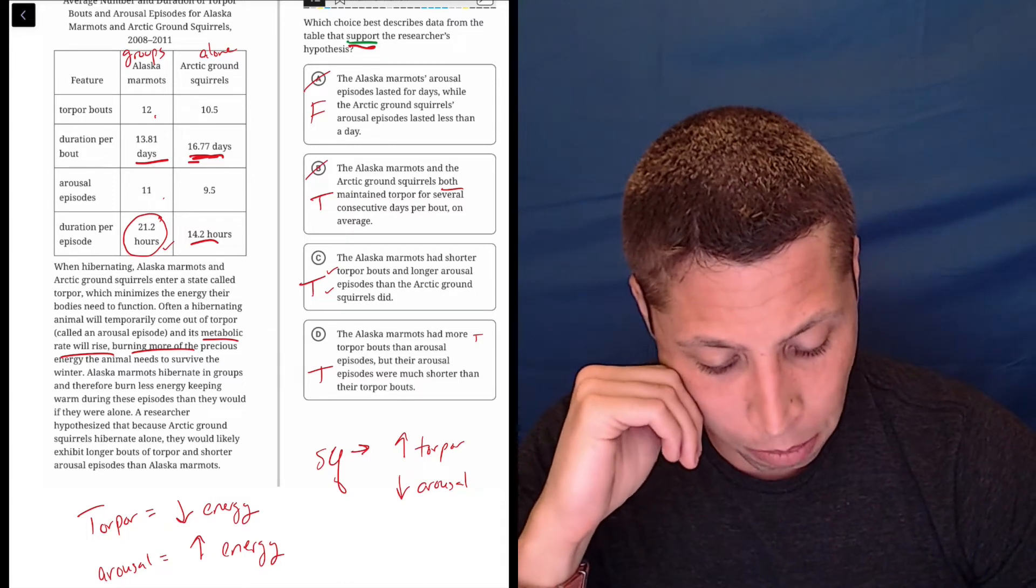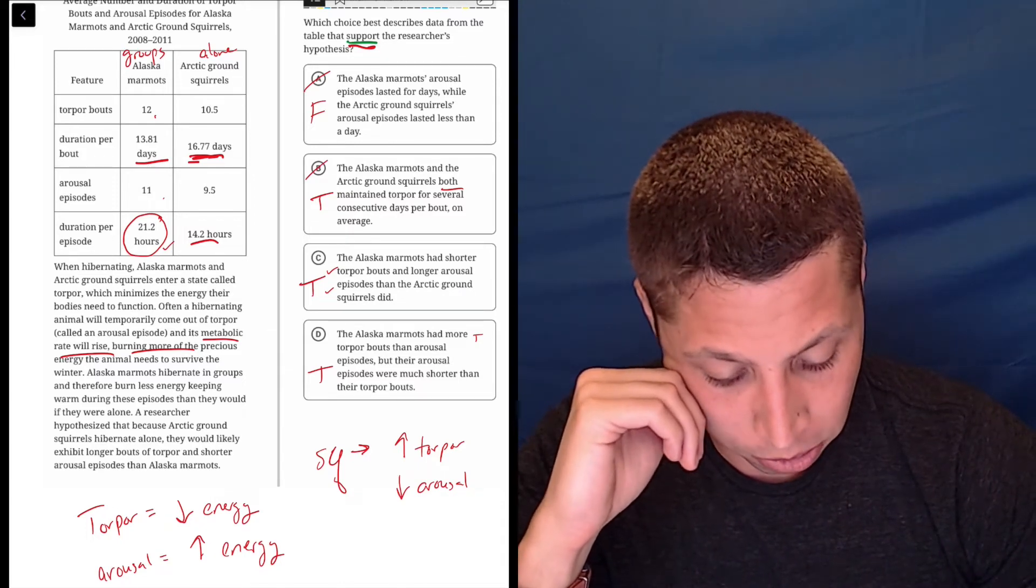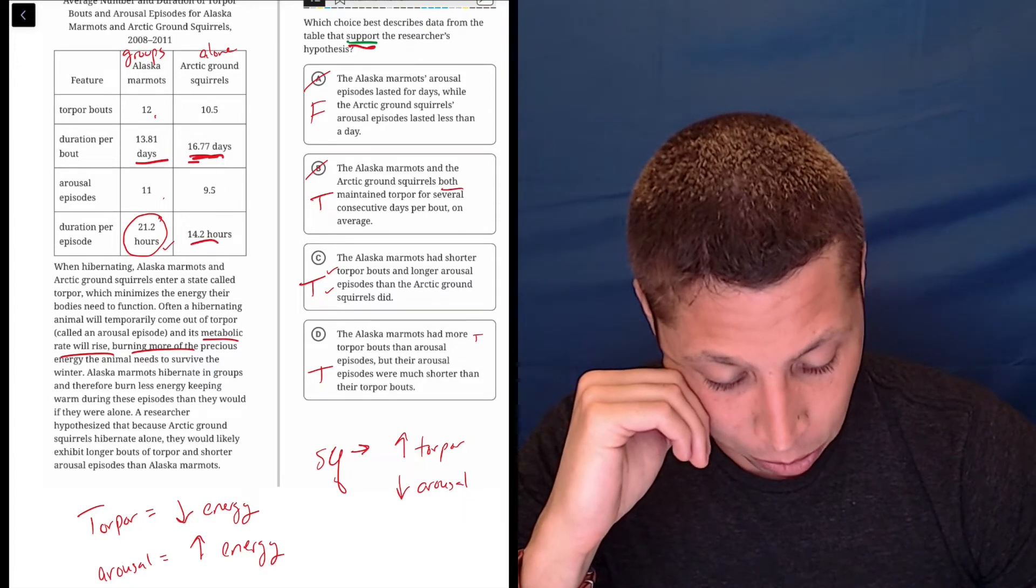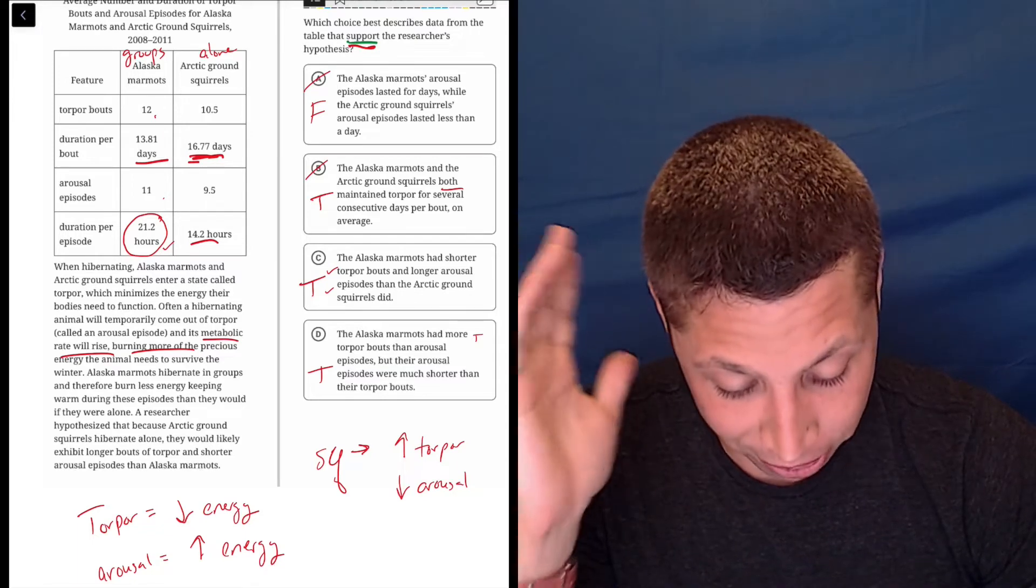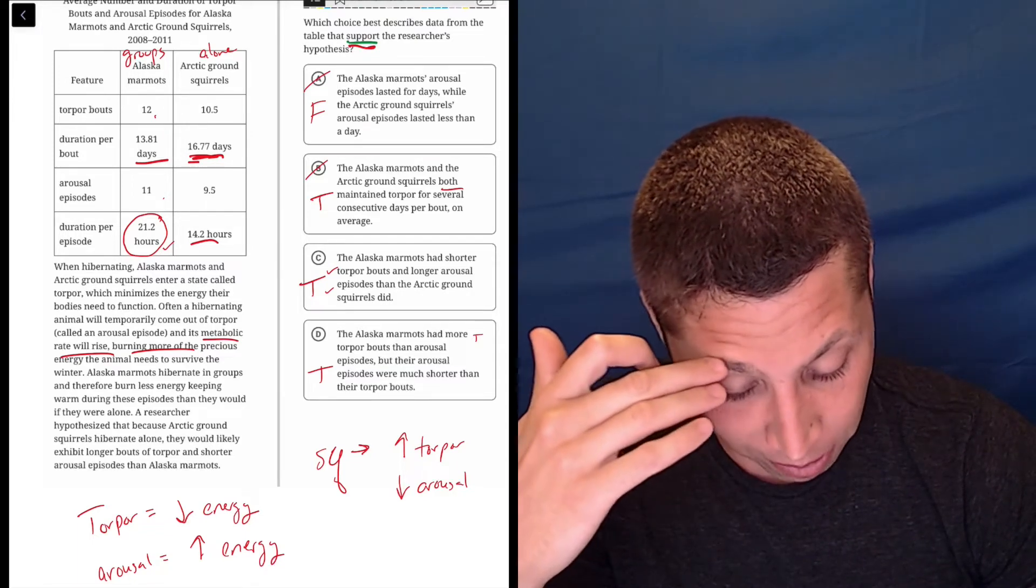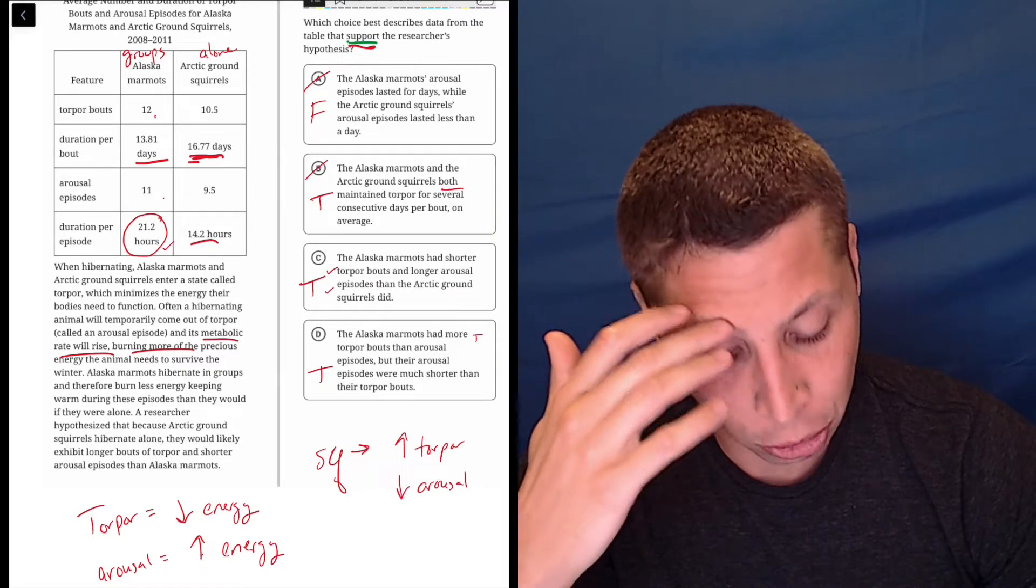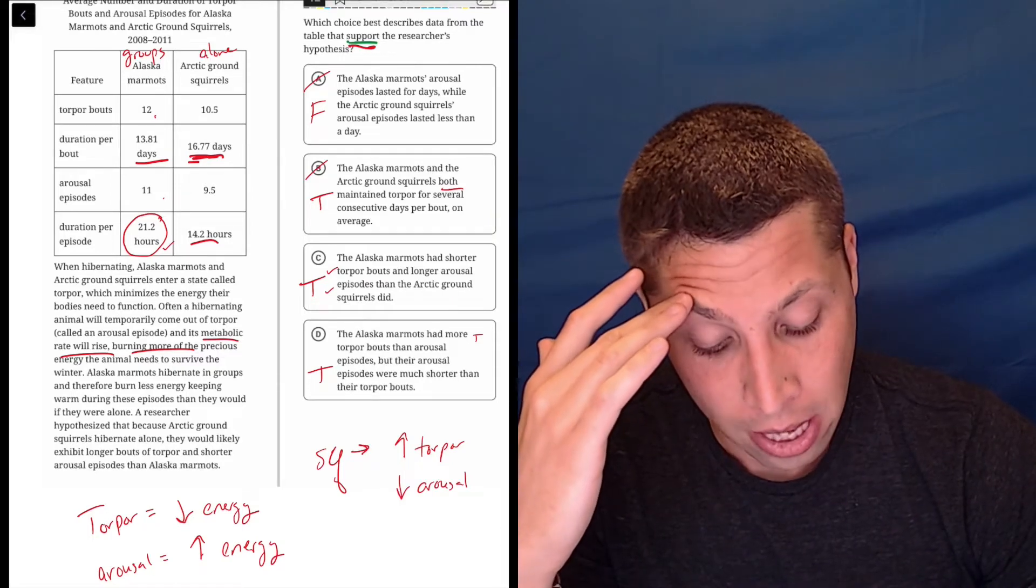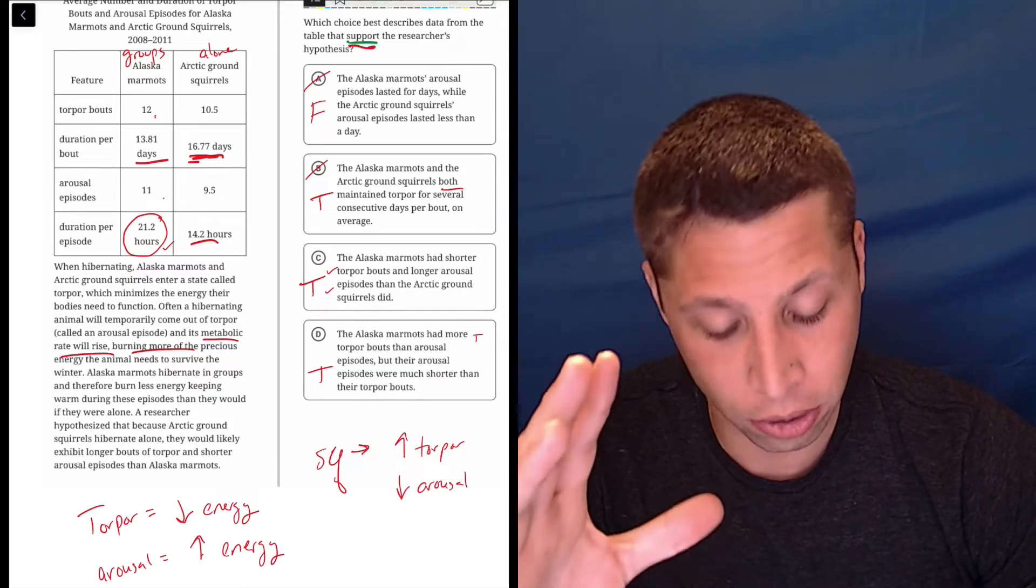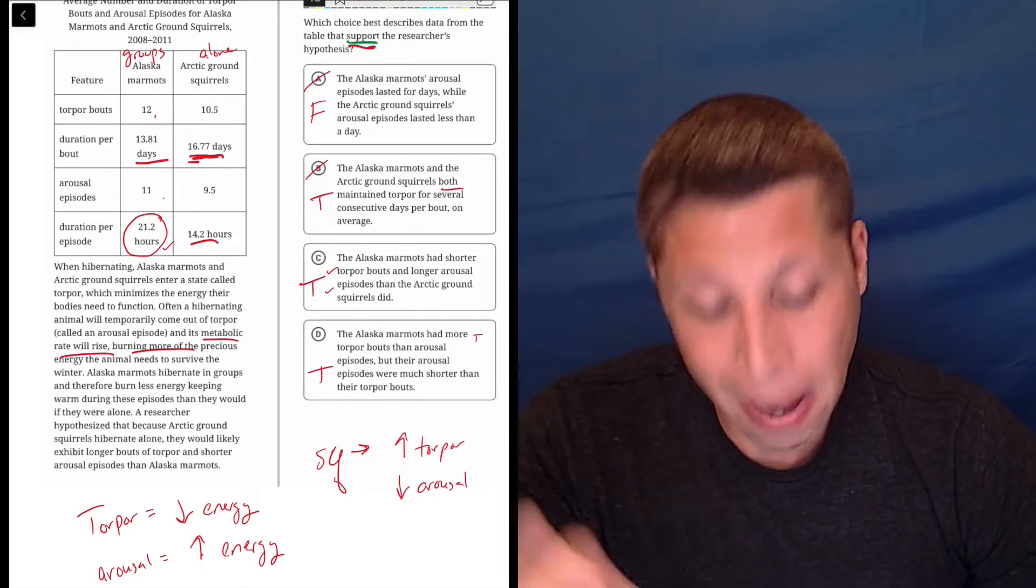Choice C, the Alaska marmots had shorter torpor bouts and longer arousal episodes than the arctic ground squirrels did. Okay, going to need a second on that one. Let's look at D. The Alaska marmots had more torpor bouts than arousal episodes, but their arousal episodes were much shorter than their torpor bouts. So right now I'm leaning towards C, even though I don't fully understand it yet.